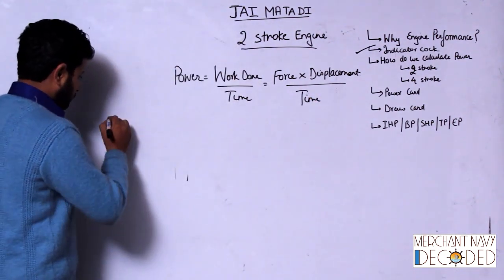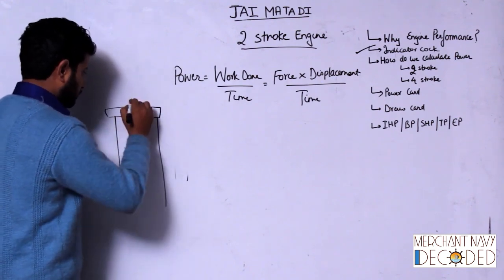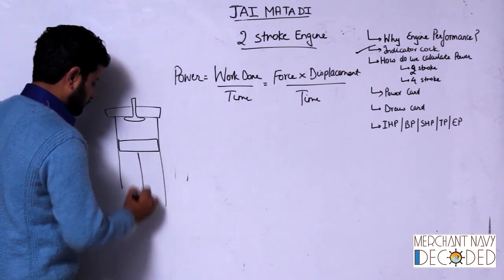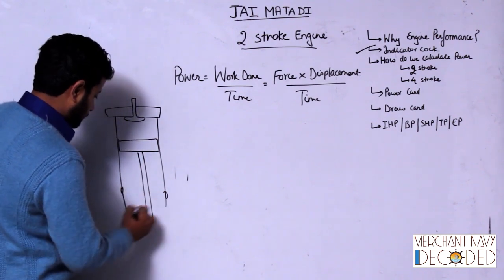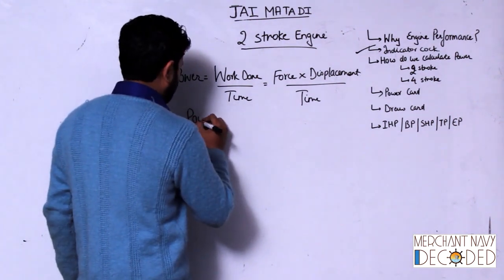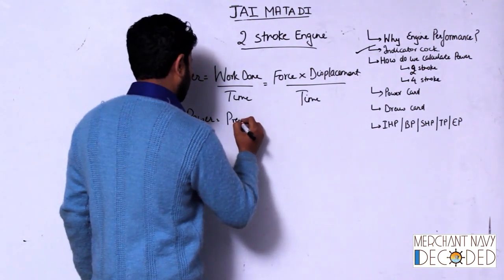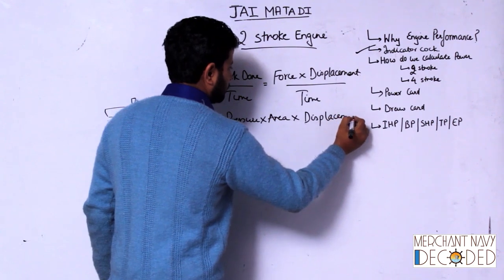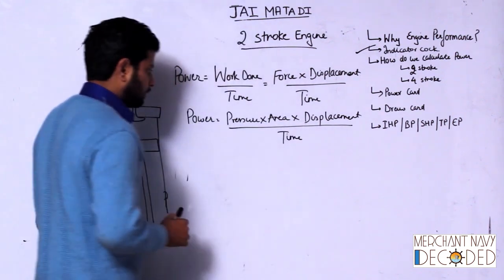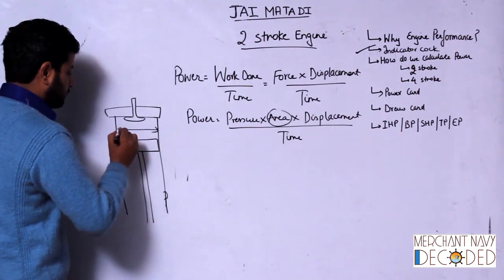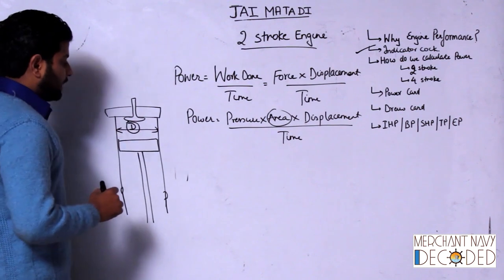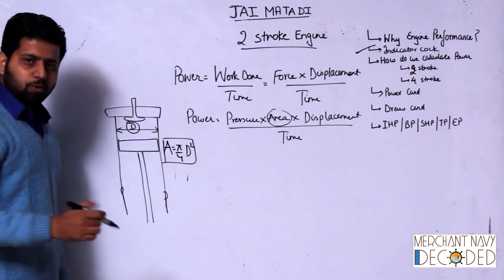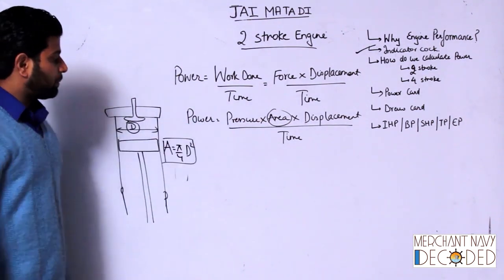Let me draw. This is my exhaust valve, and over here is my piston. Scavenge ports are over here, and the liner is here. Power is equal to force — that is pressure — into area, into displacement. This area is the area of the liner. If the bore of the liner has diameter D, then area will be pi by 4 D squared.